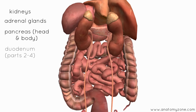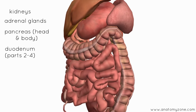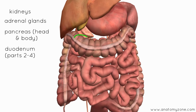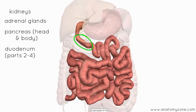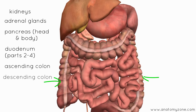And then we've got the second to fourth parts of the duodenum — the bits between the duodenum and the jejunum flexure — which are retroperitoneal. And then you've got the ascending and descending parts of the colon, which are retroperitoneal.